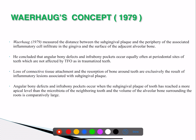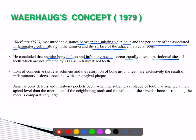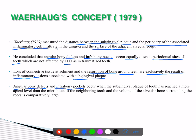Weyerhog measured the distance between the subgingival plaque and the periphery of the associated inflammatory cell infiltrate in the gingiva and the surface of the adjacent alveolar bone. He concluded that angular bone defects and infrabony pockets occur equally often at periodontal sites of teeth not affected by trauma from occlusion. Loss of connective tissue attachment and resorption of bone are exclusively the result of inflammatory lesions associated with subgingival plaque.